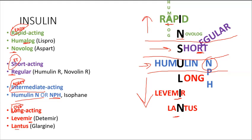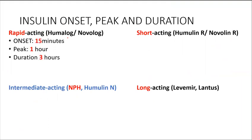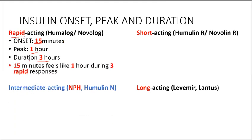Now let's look at onset, peak, and duration for each insulin type. For rapid acting — Humalog and Novolog — the onset is 15 minutes, the peak is 1 hour, and the duration is 3 hours. To remember these numbers, use this phrase: '15 minutes feels like 1 hour during 3 rapid responses.' Rapid reminds you of rapid acting insulin.